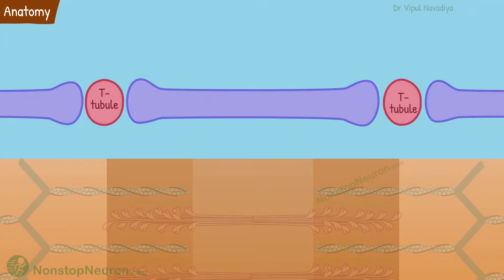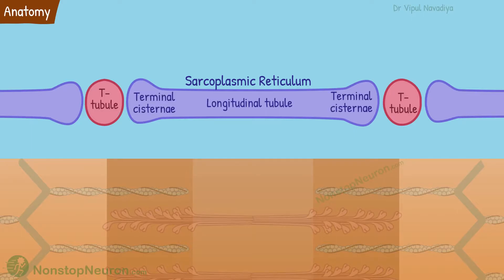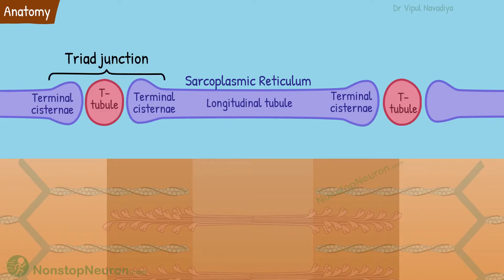These are T-tubules. The sarcoplasmic reticulum is made up of longitudinal tubules that make up most of the area, and terminal cisternae that are close to T-tubules. This assembly of a T-tubule in the middle and two neighboring terminal cisternae is called the triad junction.